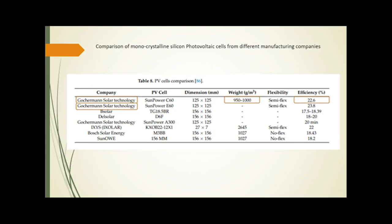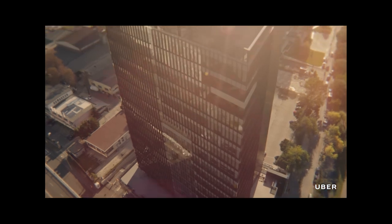As you can see, a comparison of mono-crystalline silicon photovoltaic cells from different manufacturing companies are shown below. The Gauchemin Solar technology seems to be leading with a weight of approximately 1 kilogram per meter cubed producing 22.6% efficiency. These technological advancements are what will make air taxi and drone delivery on a fully autonomous level achievable.